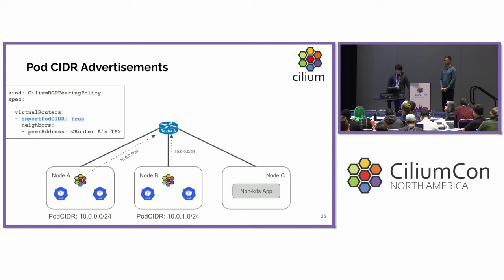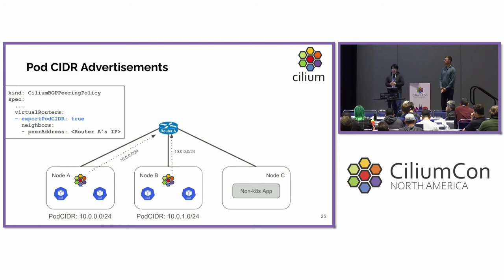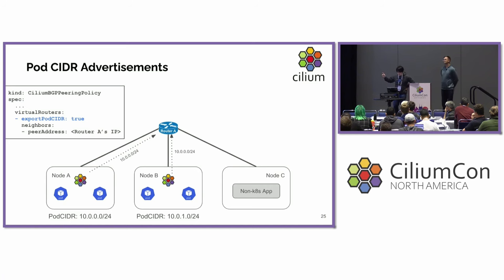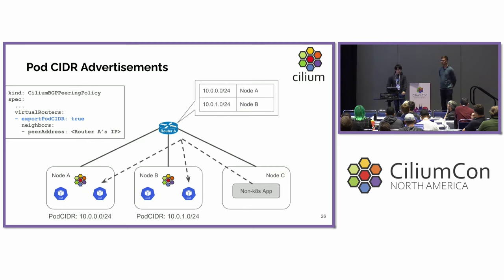How does route advertisement work? One of the popular use cases of BGP in Kubernetes is making pods directly reachable from outside the cluster by advertising the pod CIDR assigned to each node. When you want to do that, you can simply turn on the flag 'exportPodCIDR'. Cilium will then advertise the pod CIDR assigned to the node to the upstream router. The workload outside the cluster can then directly reach the pods through that router.